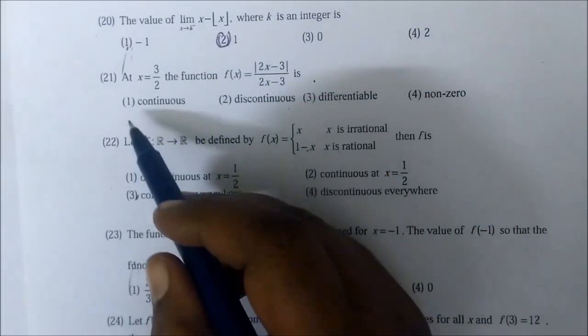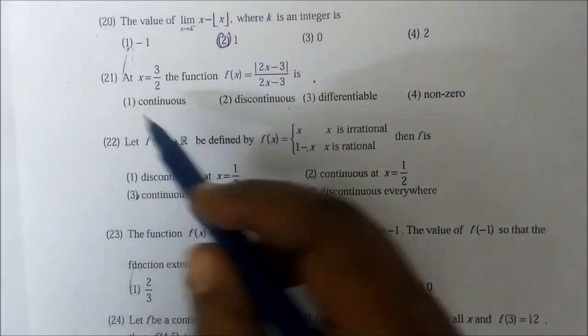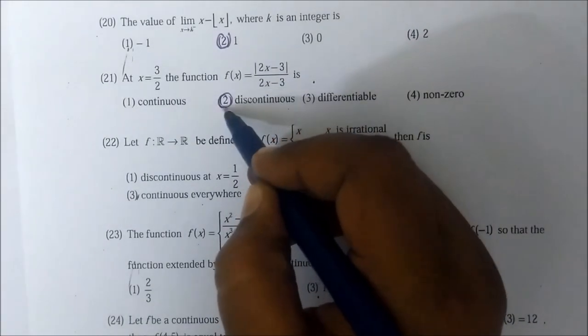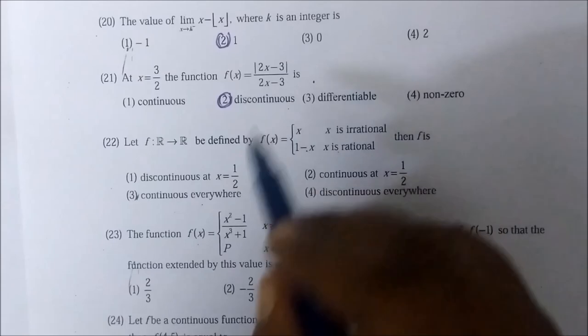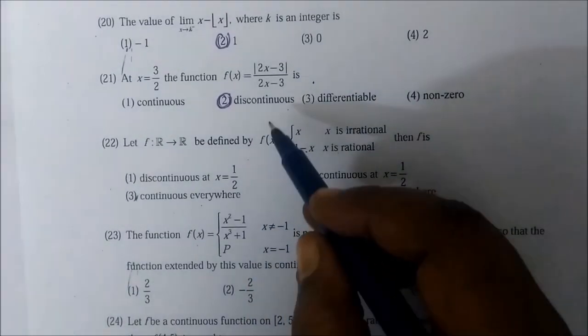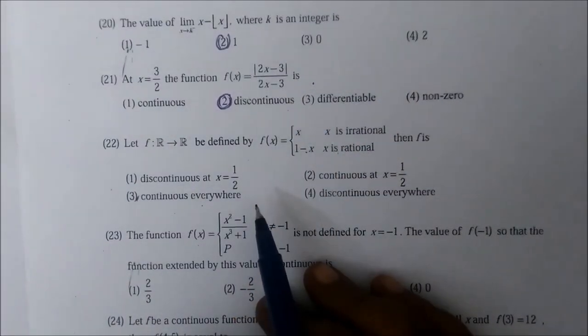Then for question number 21, this is discontinuous. Mostly limit does not exist. Discontinuous. This is the option. So you can select this.